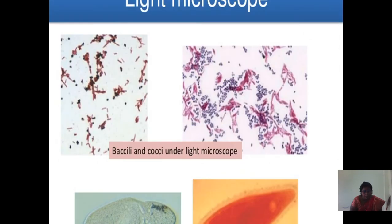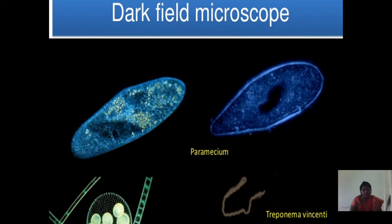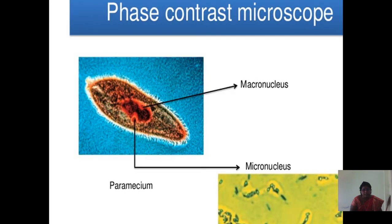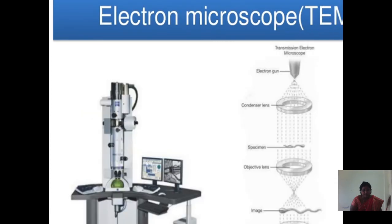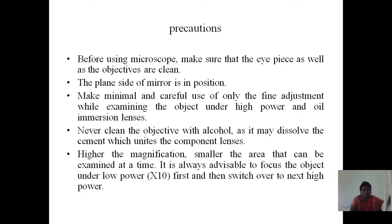This is the light microscope showing bacilli and cocci under light microscopy. This is the dark field microscope showing paramecium, treponema, and vincentin. This is the phase contrast microscope showing macronucleus, micronucleus, and paramecium. This is the fluorescence microscope. This is the electron microscope.